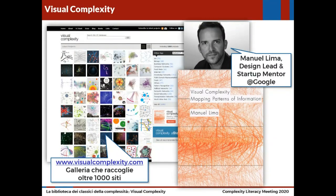Stasera vi parlo di Visual Complexity, scritto da Manuel Lima nel 2011, un libro che per ora c'è solo in inglese. Manuel Lima è Design Lab e Startup Mentor a Google. Prima di tutto, lui ha creato nel 2005 un sito, visualcomplexity.com, che è ancora attivo e potete vedere, dove nel tempo ha iniziato a raccogliere tutta una serie di visualizzazioni dati, una galleria, e al momento raccoglie oltre 1000 siti.